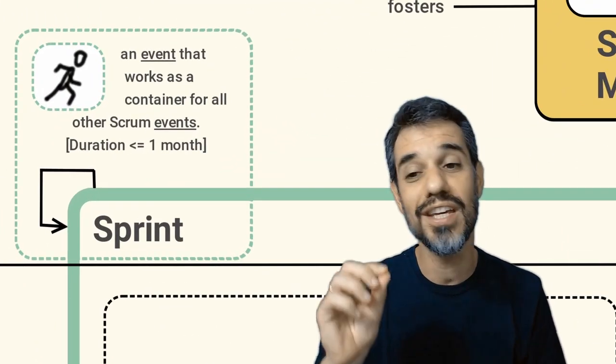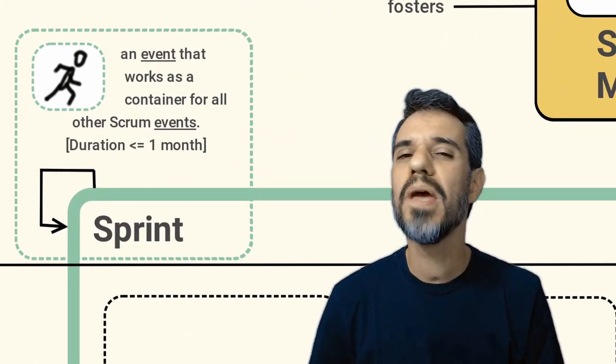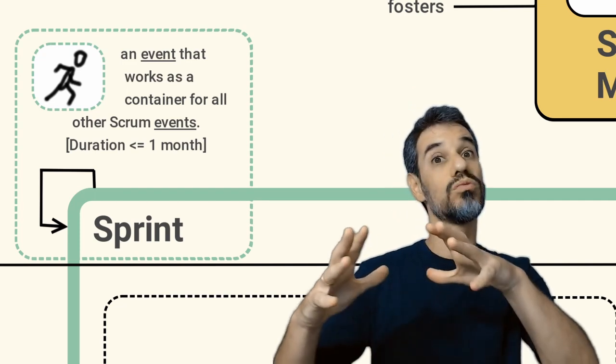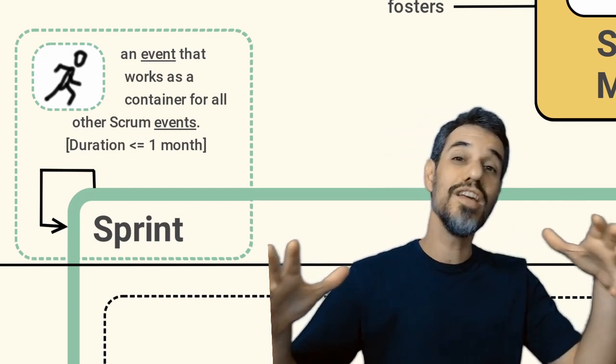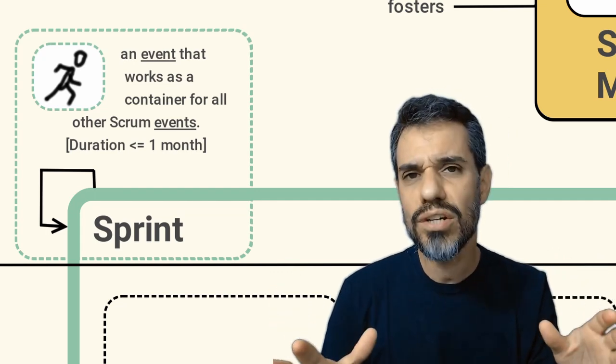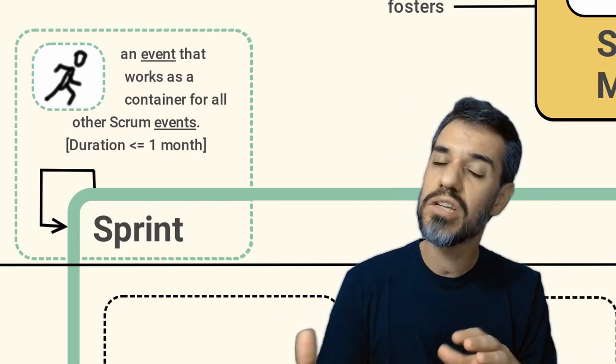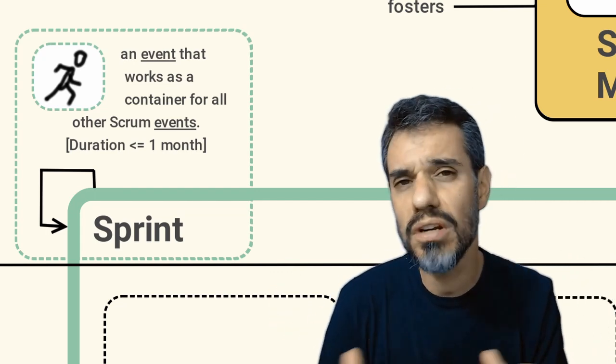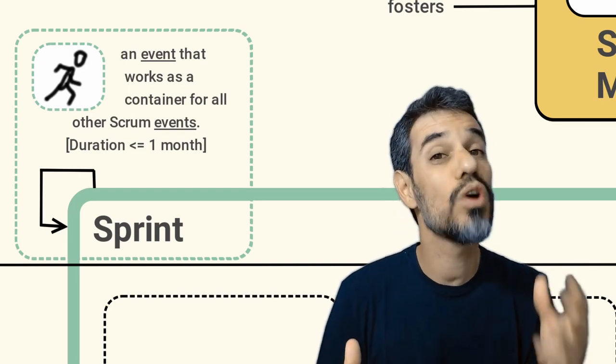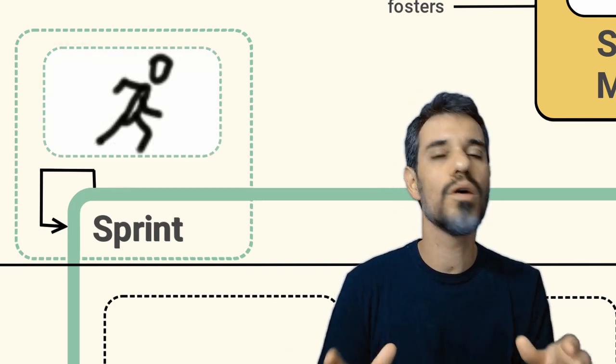The Scrum Master should ensure that the events of Scrum are happening. The first event we are going to see is the Sprint. Sprint may be seen as a container where all other events happen inside Scrum. The duration of a sprint may change from company to company, but usually we may say that it should not pass over one month.